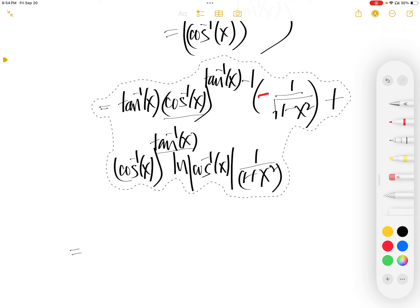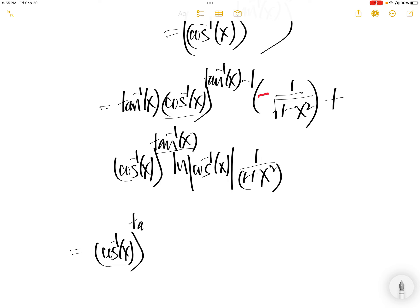So you can pull out the common factor which is arccos of x to the power of arctan of x. Then you have negative from here, then arctan of x, then you have arccos of x to the power of negative 1, then you have 1 over x squared, plus you take this out.